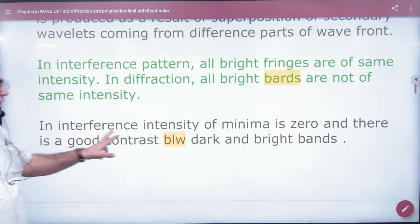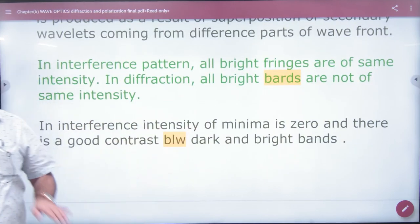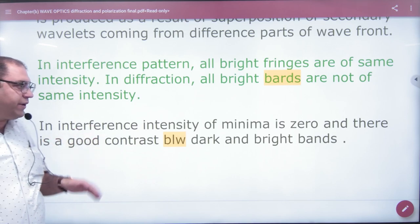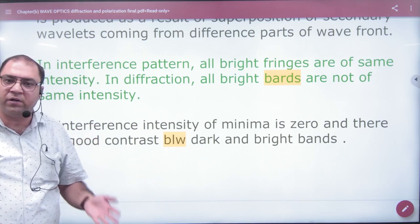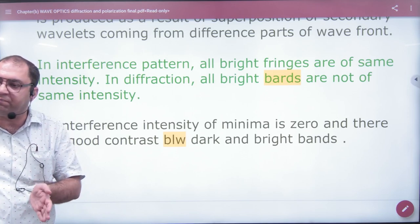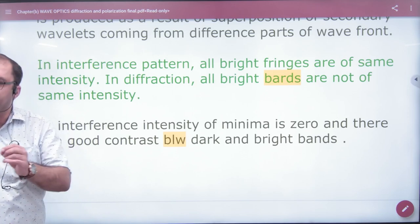Next is interference: intensity of minima is zero and there is good contrast between dark and bright fringes, but diffraction is not like that. Pure dark is not like that, it's a little more bright.